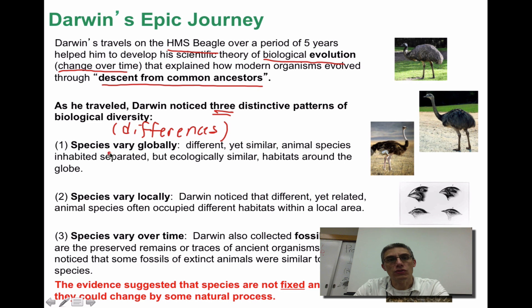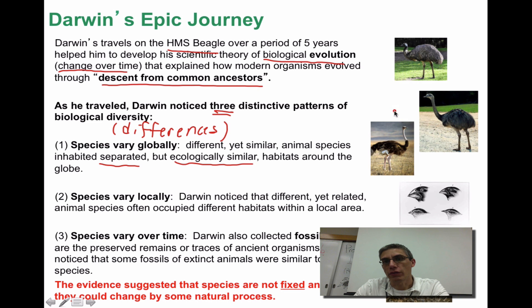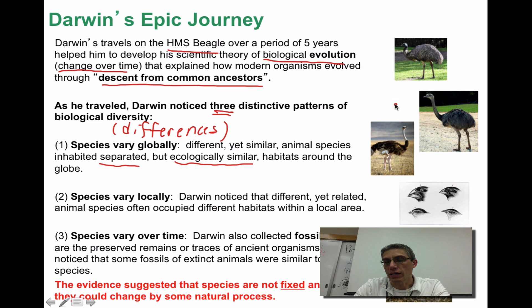One thing Darwin noticed was that species vary globally — different yet similar animal species inhabited separate but ecologically similar habitats around the globe. For example, if you look at the birds on the right-hand side, we have an ostrich, an emu, and a rhea. All of these birds look very similar — they're flightless birds with very large, powerful legs and pretty long necks. Each one occurs on a different part of the globe and really didn't have any contact with each other. But because of the habitat they evolved in, they basically evolved to be very similar to each other.